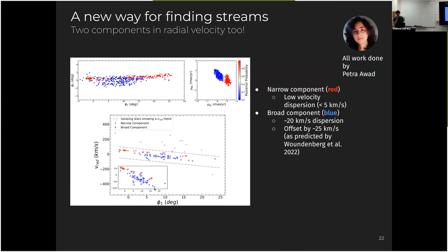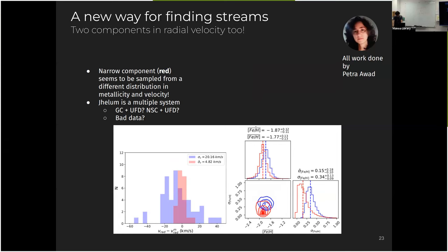Here is just a zoom in, if you don't believe me, the narrow component and the broad component forming two different sequences. If you have a very keen eye to measure dispersions, you also would see that the red dots, they form a slightly more dynamically cold, they have a smaller velocity dispersion.